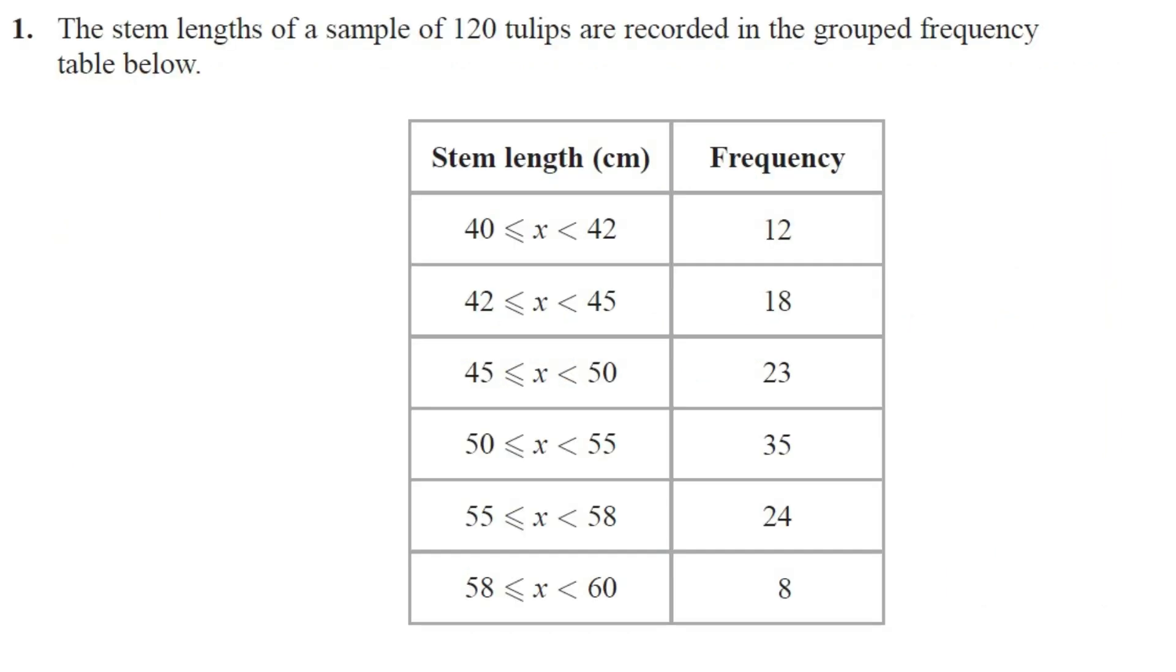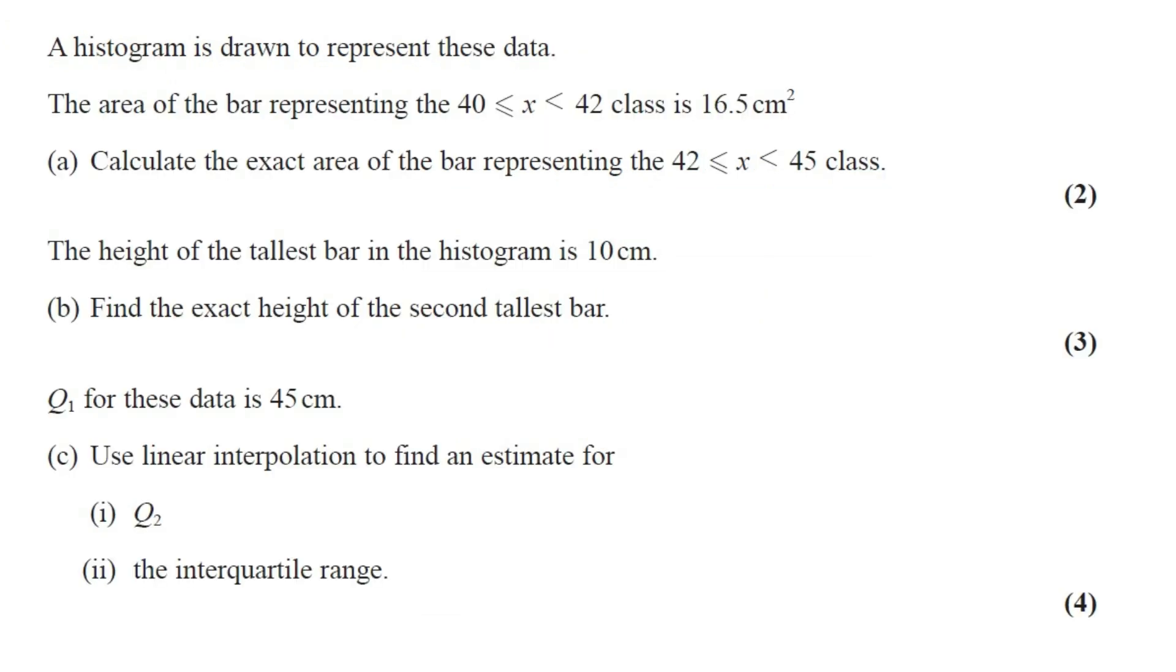Question number 1. The stem lengths of a sample of 122 tulips are recorded in a grouped frequency table given below. A histogram is drawn to represent this data. The area of the bar representing 40 to 42 class is 16.5 cm². Part A: Calculate the exact area of the bar representing 42 to 45 class. This question got 2 marks.